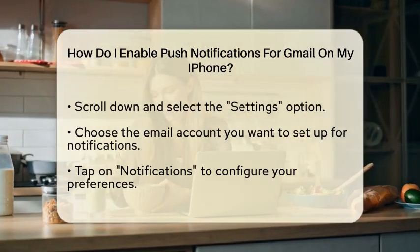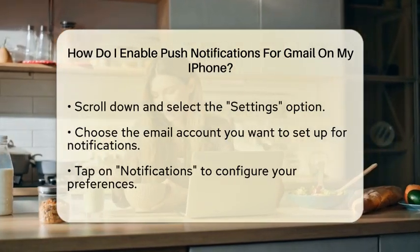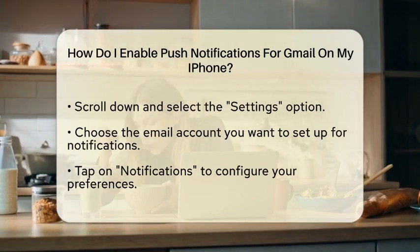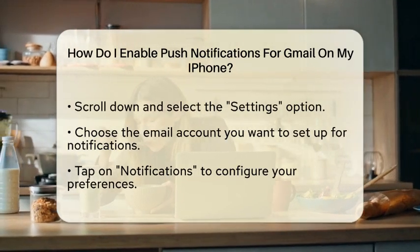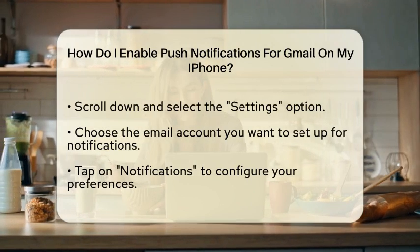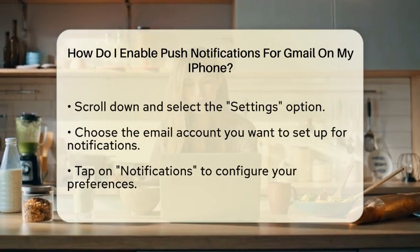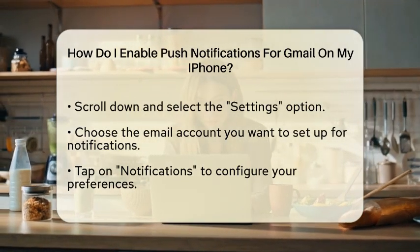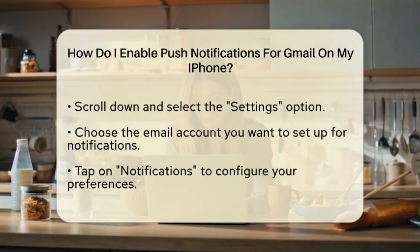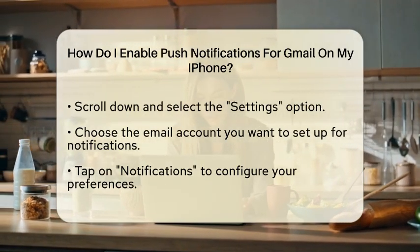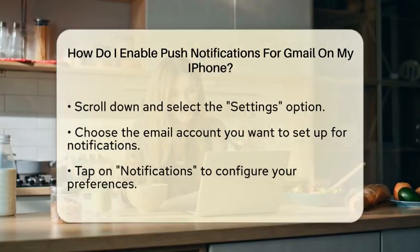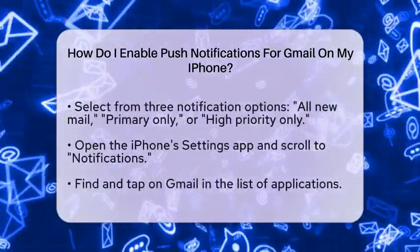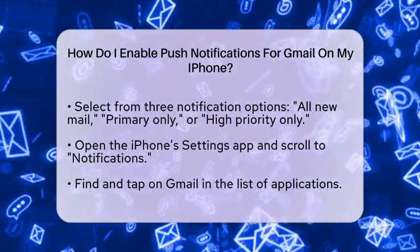Now tap on notifications. Here, you can decide what type of emails you want to be notified about. You have three options: all new mail, primary only, or high priority only. Pick the one that suits your needs best. This way, you can customize your notifications based on what is most important to you.